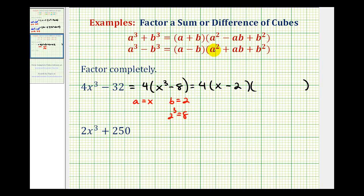The first term of the trinomial factor would be a², which in this case would be x². Then it's going to be plus a times b. Well if a is x and b is two, a times b would be x times two or 2x.